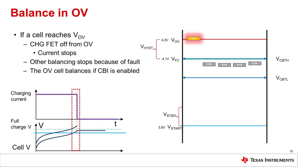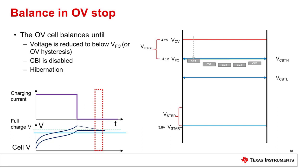The third balance mode is in overvoltage. When a cell is pushed above the overvoltage threshold, the fault will stop charge current. If cell balancing is enabled, the overvoltage cells will balance. The overvoltage cells will balance until they drop below VFC or the overvoltage hysteresis.